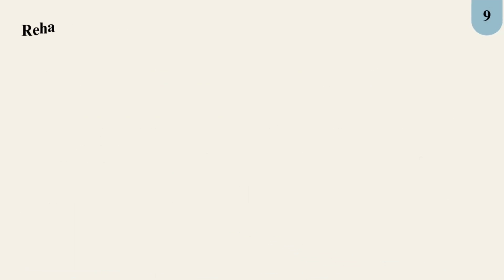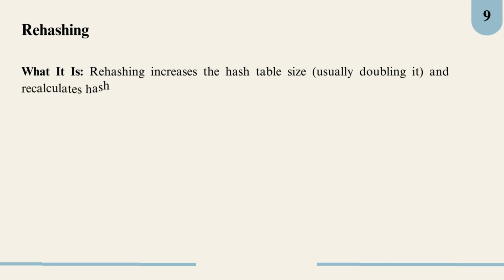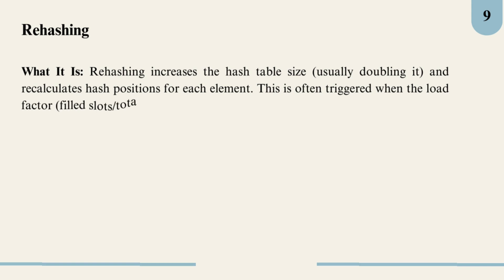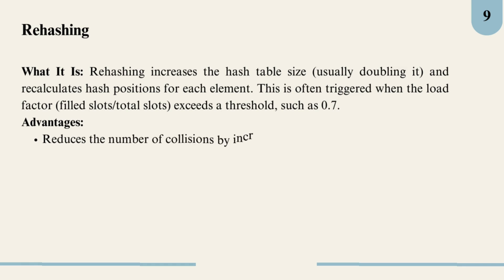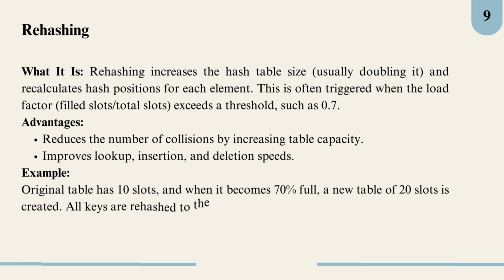Rehashing is a way to handle collisions when the table is almost full or when the load factor gets too high. Instead of just handling more collisions, we actually expand the hash table by increasing its size, often doubling it, and rehashing all items into this larger table. It's similar to moving into a larger apartment when you are running out of space. This helps keep the table organized and ensures we are less likely to encounter collisions, as there are more slots available. Rehashing is powerful but computationally expensive since we have to re-assign all items.